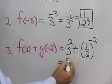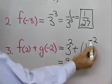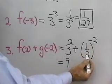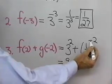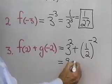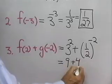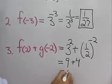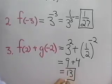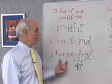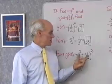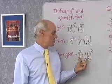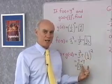3 squared is 9. 1 half to the negative 2 — if I square 1 half, I get 1 fourth, and then I take the reciprocal of that, I get 4. So I end up with 9 plus 4, and 9 plus 4 is 13. So that's f of 2 plus g of negative 2 — I simply substitute for my variable x in the expressions for f and g and simplify what I get.